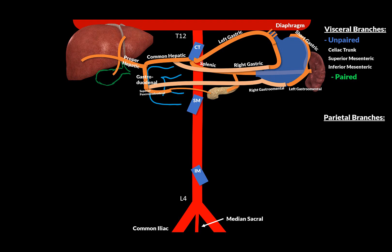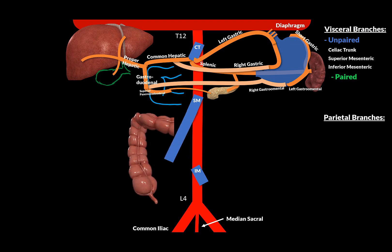Now let's do the superior mesenteric artery. It descends towards the cecum and terminates as the ileocecal artery, because the ileum of the small intestine continues into the large intestine through the cecum — called the ileocecal region. The ileocecal artery also supplies the appendix through the appendicular branch. A mnemonic to remember: IN stands for the inferior pancreato-duodenal artery, supplying the head of the pancreas and the duodenum, as well as communicating with the superior pancreato-duodenal of the celiac trunk.